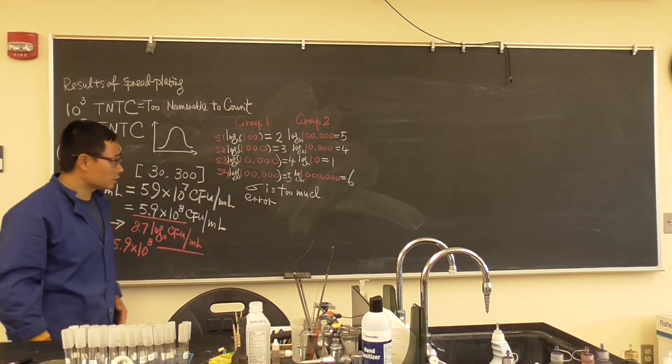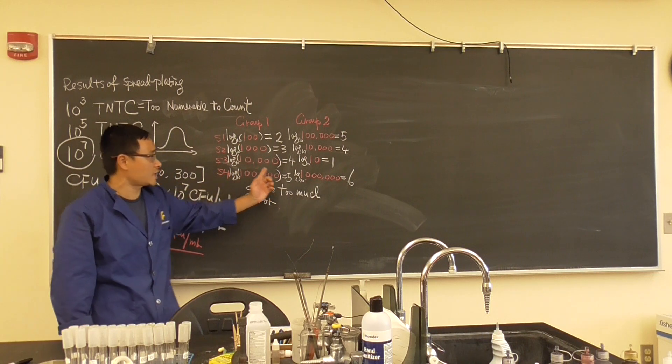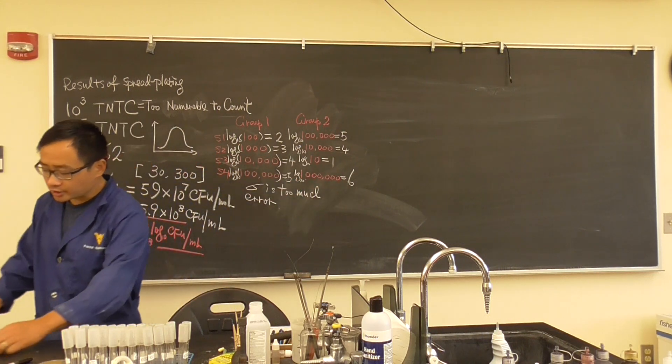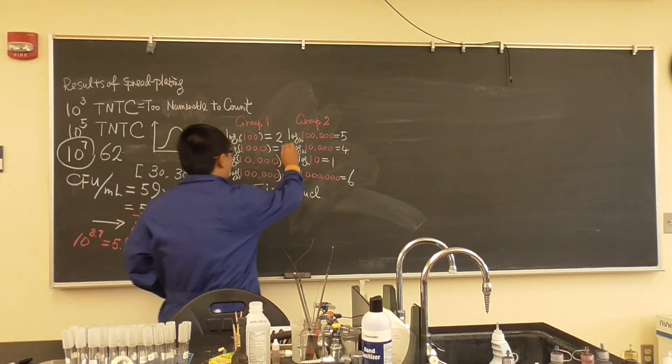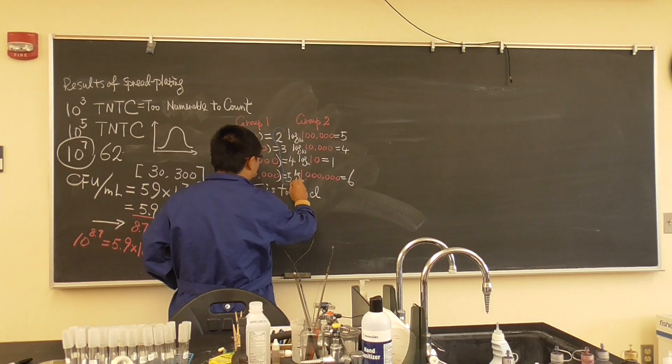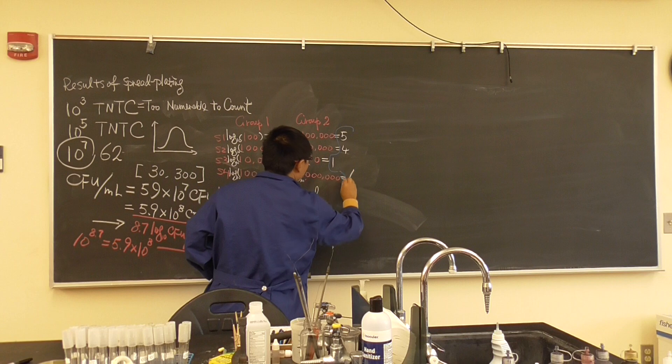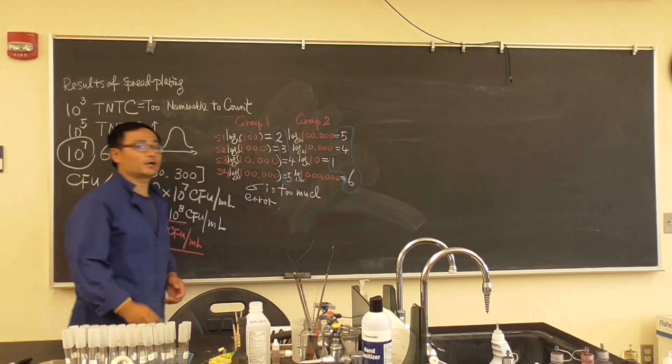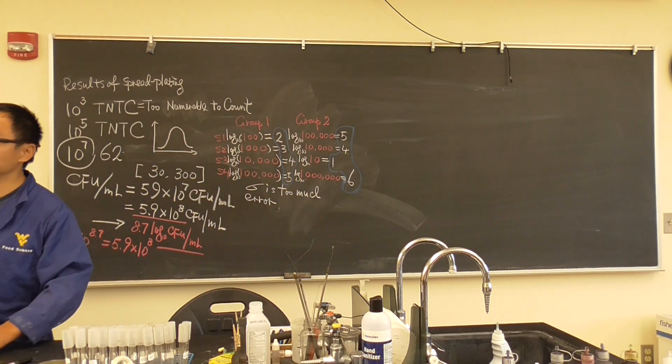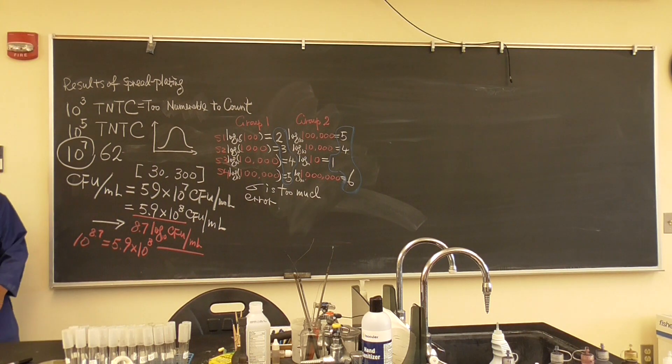So instead of comparing those giant numbers, what we are comparing here is actually 2, 3, 4, 5, 5, 4, 1, 6. Now can we do the comparison? Yes. Because it's normally distributed. That's the reason.